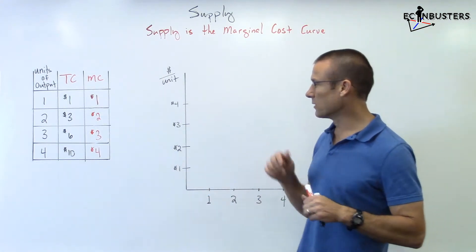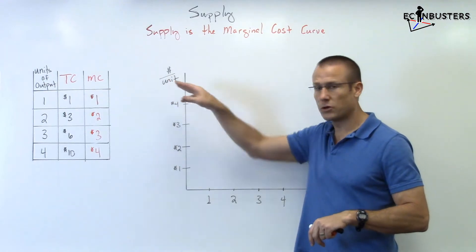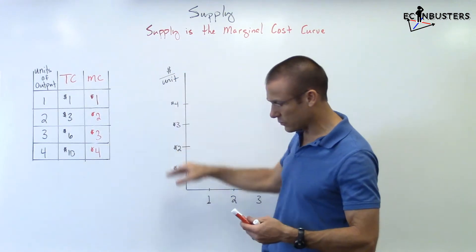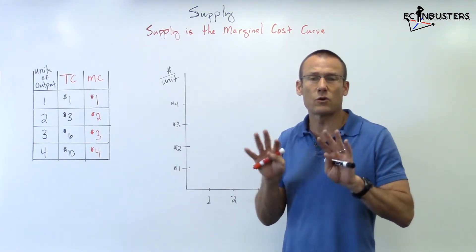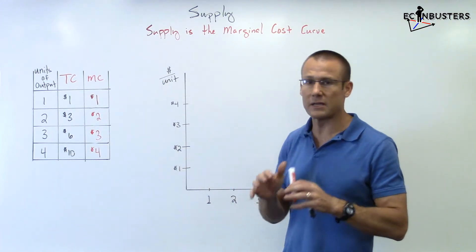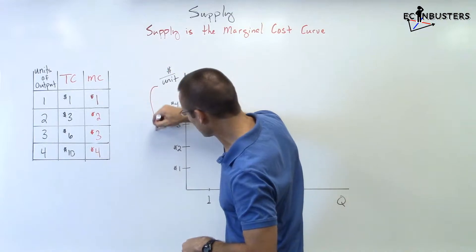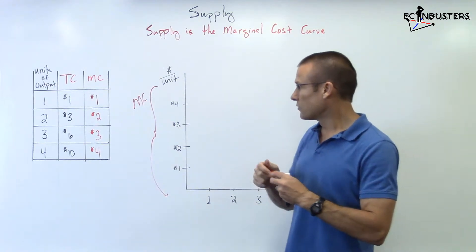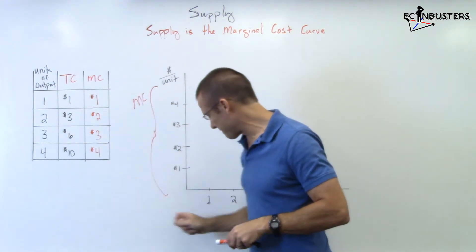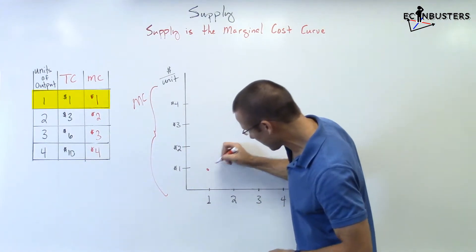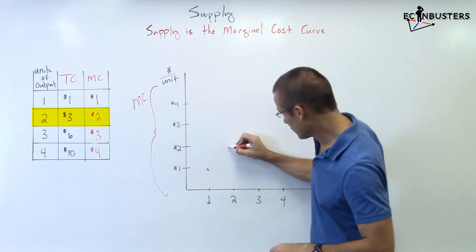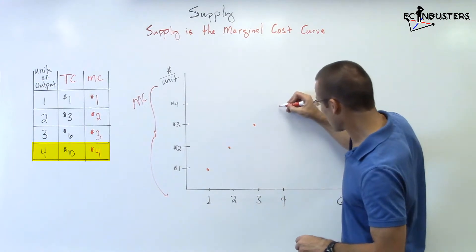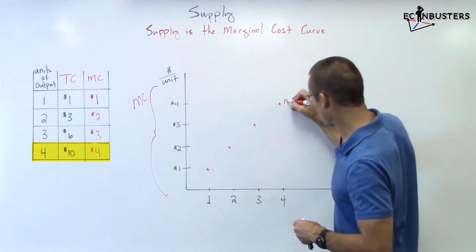Now let's go graph it. This should look familiar — dollars per unit on the vertical axis, which is what we always have when we do supply and demand, and quantity on the horizontal. We're going to look at those values not as price; in this video, I want you to think of them as marginal cost. So we plot it out: at the first good, marginal cost $1; second good, $2; third good, $3; fourth good, $4. There we go — we've got all these dots.